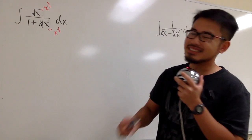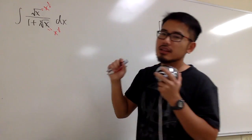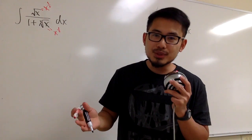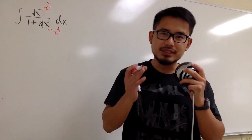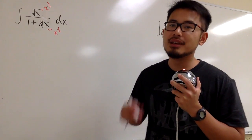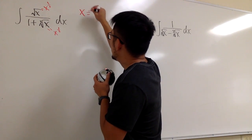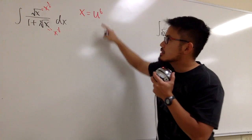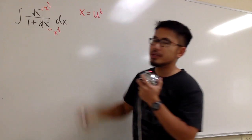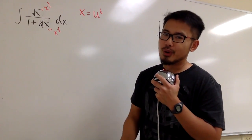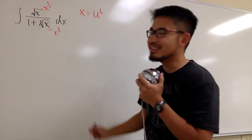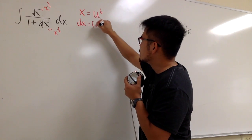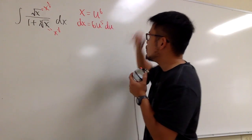The key is this: we have 1/2 and 1/3. The lowest common multiple of the denominators is 6. So what I'm going to do is let x equal to something to the 6th power — and that something is u. So x equals u to the 6th power. The reason we got 6 is that it's the least common multiple between 2 and 3. Now we differentiate to get dx, which is 6u to the 5th power du.